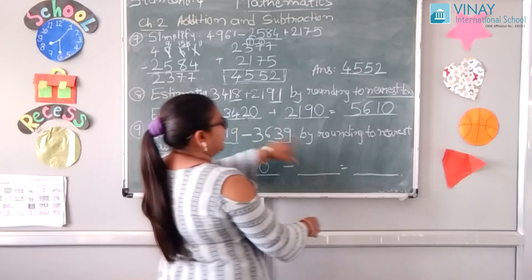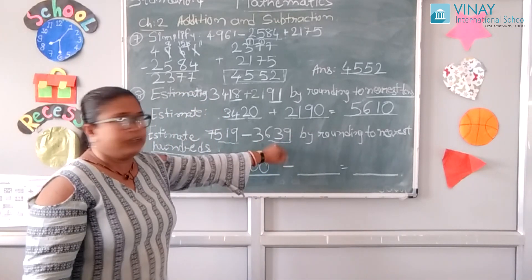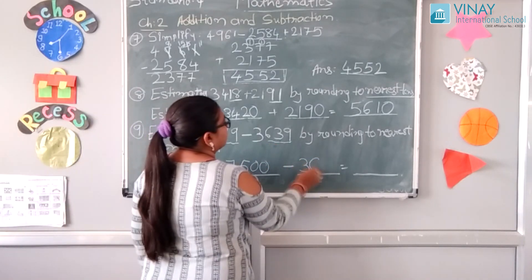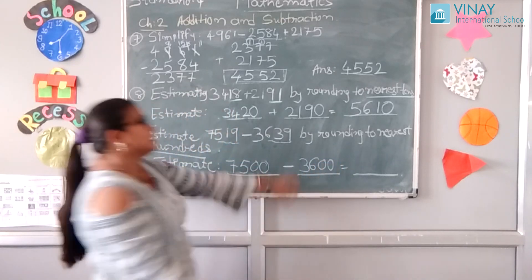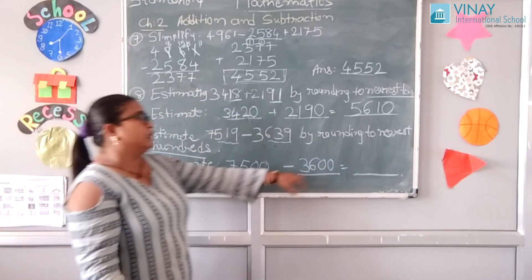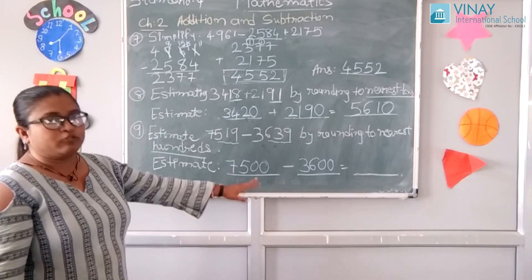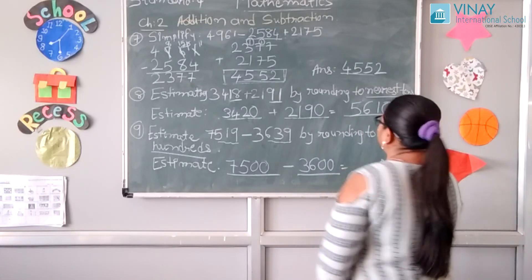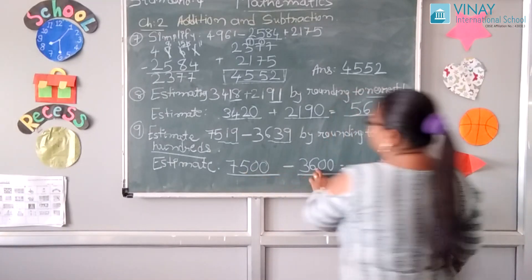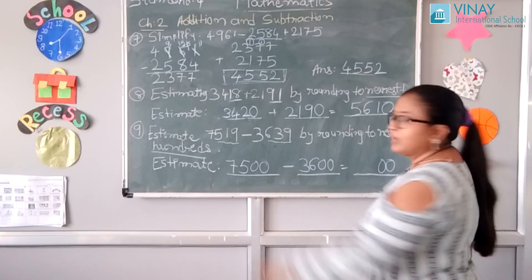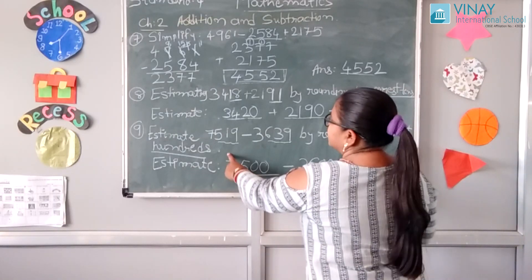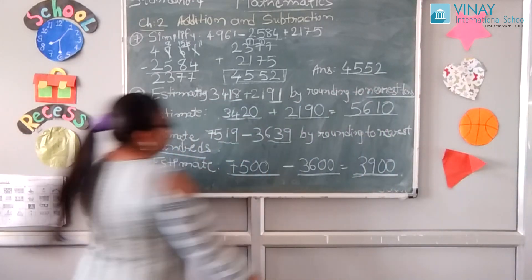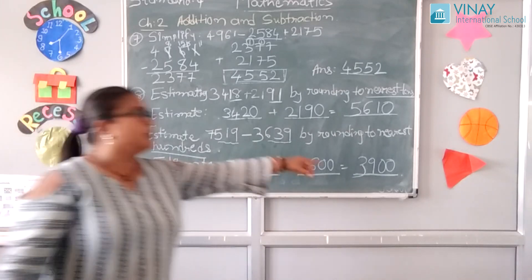Here 3639. If it's 50 or more, we would make it 7, but we have 39, so which estimate rounding to 3600. Again we have to subtract horizontally: 0, 0, 15 minus 6 is 9, 7 minus 6, 6 minus 3 is 3. So we got our answer 3900.